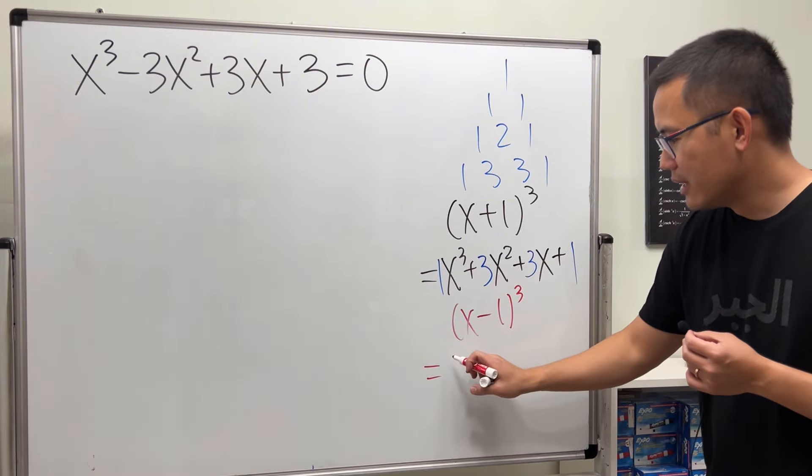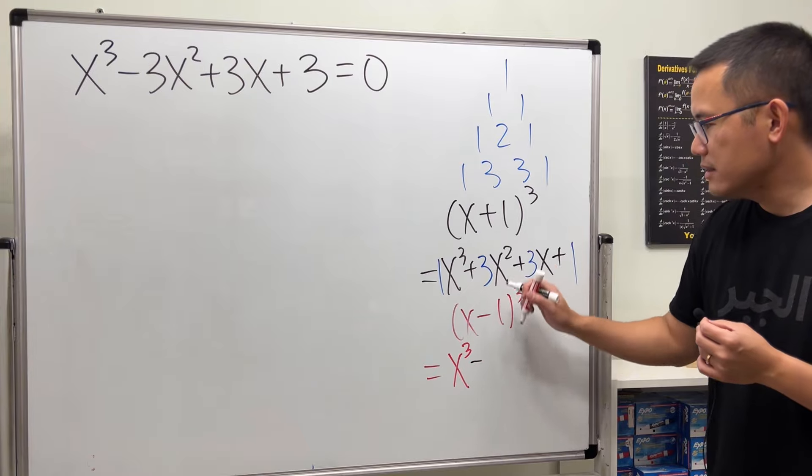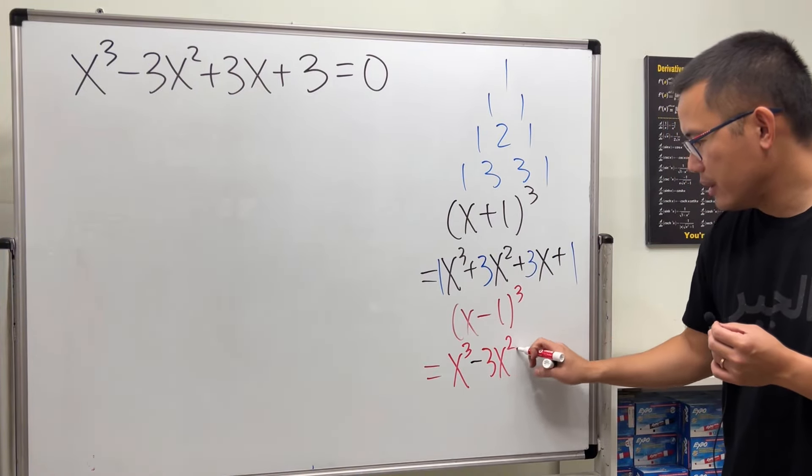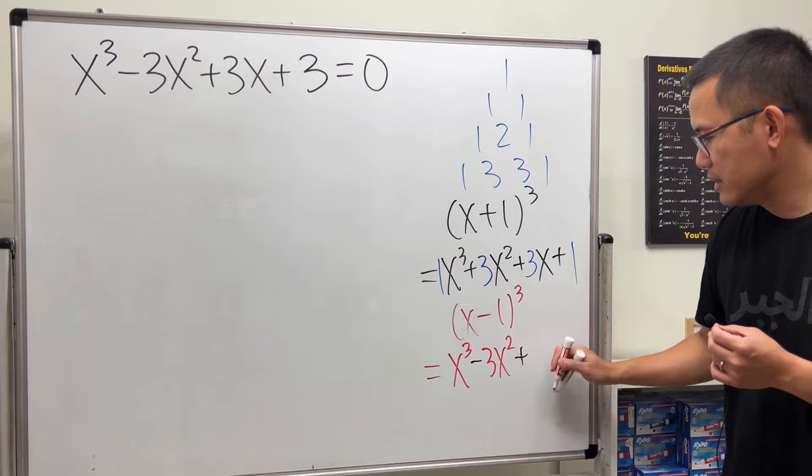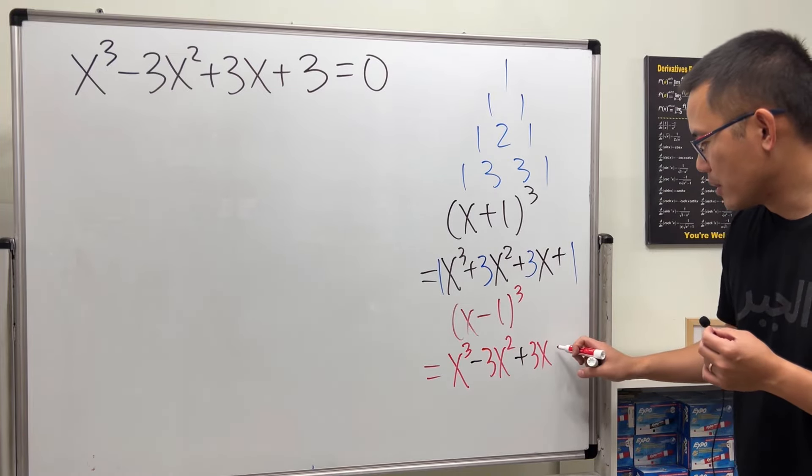You're going to get the first is positive x³, next is minus and you have the 3x², and then plus 3x, and then lastly negative 1³, so it's minus 1.